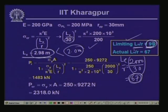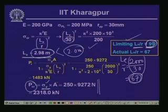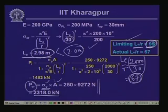Since the actual slenderness is below the limiting value, we consider two options. If the member fails by yielding, the critical load = sigma_y × A = 250 × 9272 = 2318 kN. Since the actual L_e/r is less than the limiting value, the member may fail by a combination of buckling and yielding — placing it in the intermediate column range — so we apply Rankine's formula.